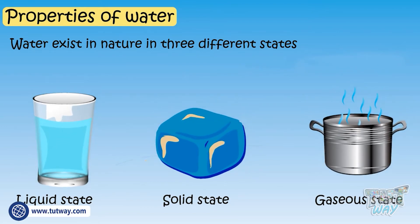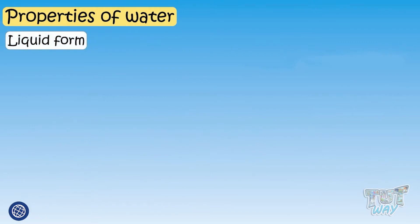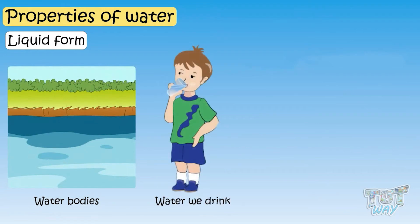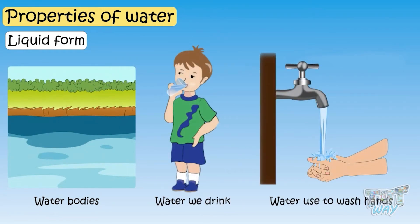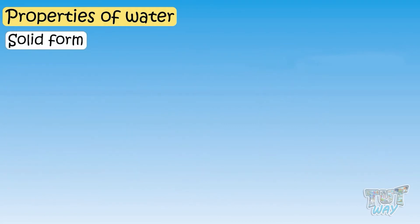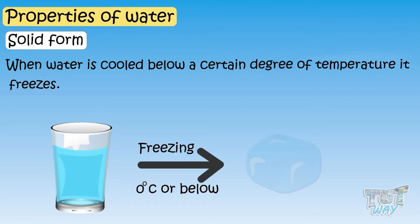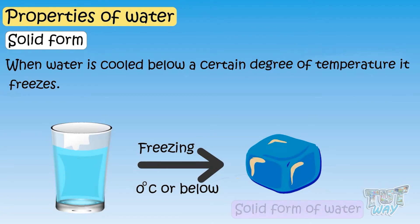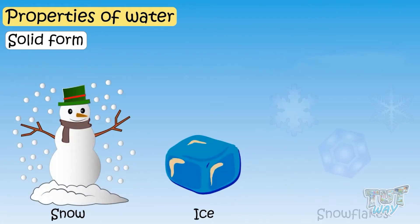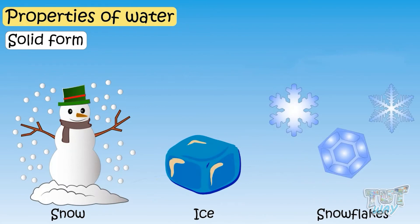First of all, the liquid form of water. Water that we see in water bodies, water that we drink, water that we use, is all a liquid form of water. The solid form of water: when water is cooled below a certain temperature, it freezes, and that form of water is known as the solid form. Ice and snowflakes are all solid forms of water.